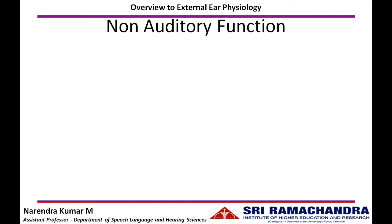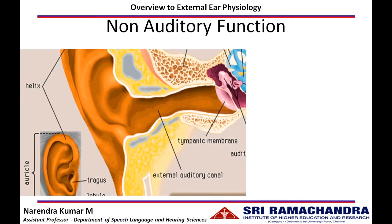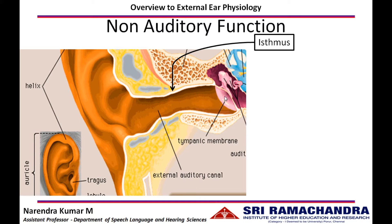Moving on to the non-auditory function of the external ear: the ear canal consists of a narrow region called the isthmus, which is the junction between the cartilaginous and bony part of the ear canal. This narrow region prevents the entry of foreign objects. However, if foreign objects are tiny, they can still enter the ear canal and damage the tympanic membrane.